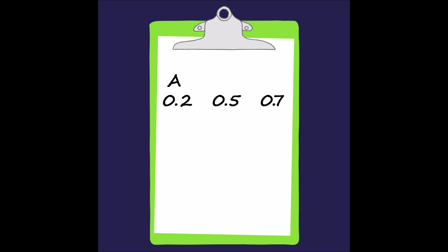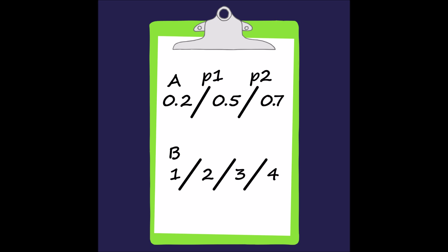Let's start with A. Attribute A has three values: 0.2, 0.5, and 0.7. We create cut points — places where we might choose to merge or not merge two values. We place split point P1 between values 0.2 and 0.5 in attribute A, and split point P2 between values 0.5 and 0.7. For attribute B, which has four values and three split points, we place Q1 between 1 and 2, Q2 between 2 and 3, and Q3 between 3 and 4.